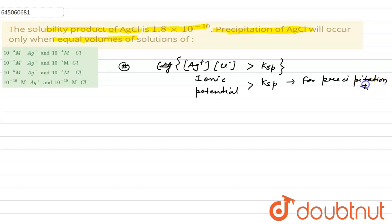Now, let us calculate the ionic potential of all the given solution. For the first solution, the Ag+ concentration multiplied by Cl- ion would be equal to 10^-4 into 10^-4 which would be equal to 10^-8 molar.